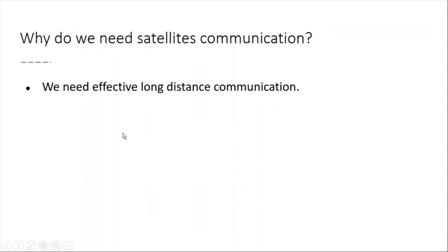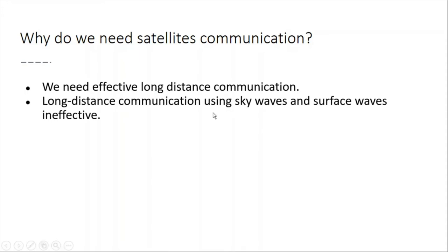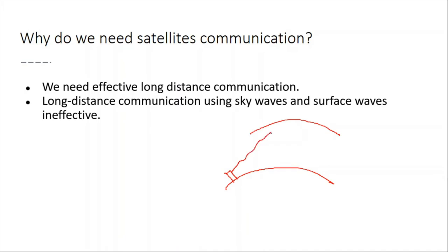Why do we need satellite communication? We need it because we need effective long distance communication. For long distance communication we are using sky waves and surface waves, but they are ineffective. For example, here we have a transmitter that transmits signals; the signals reflect off the ionosphere and back to the receiver.